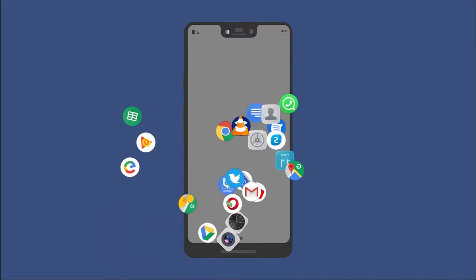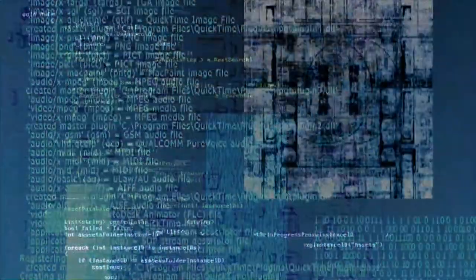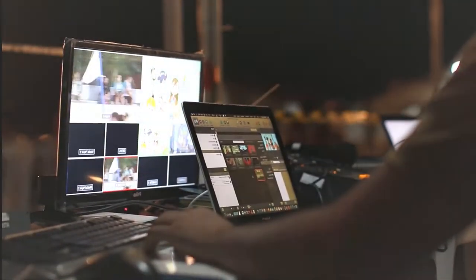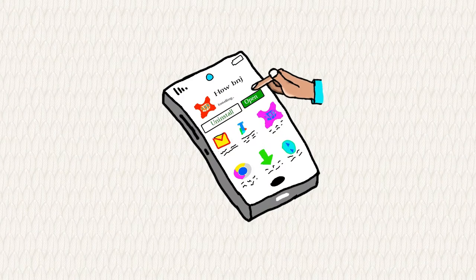The apps and websites consist of scripts, various lines of codes, and different media files. When we open an app or visit a website for the first time, all these things take time to load in the app or on the webpage.